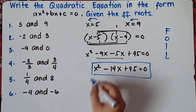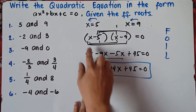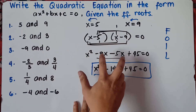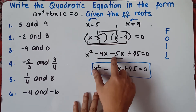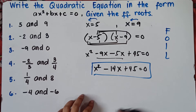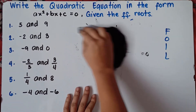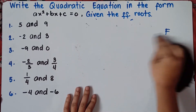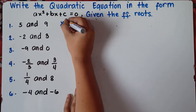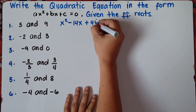Easy, right? So once again: transpose 5 from right to left, same with 9, then do the FOIL method, and combine like terms. Negative 9 and negative 5 — copy the negative sign, then add the numbers. The answer for number 1 is x squared minus 14x plus 45 equals 0.